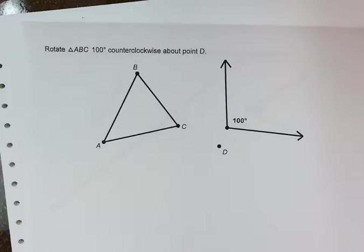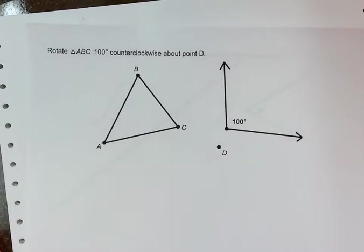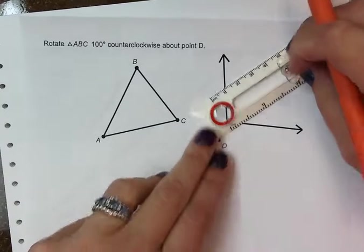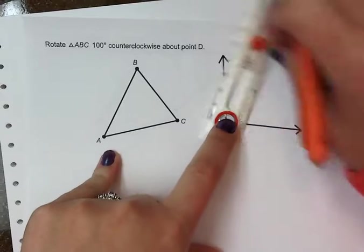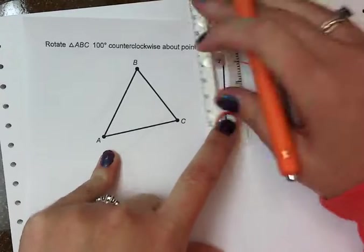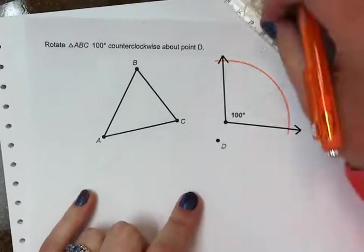Next example. It's the same thing. Just this time we're going counterclockwise. So step one, we're going to make an arc across our angle. Any size that you want, but remember bigger is better, so you don't want to make super tiny arcs.